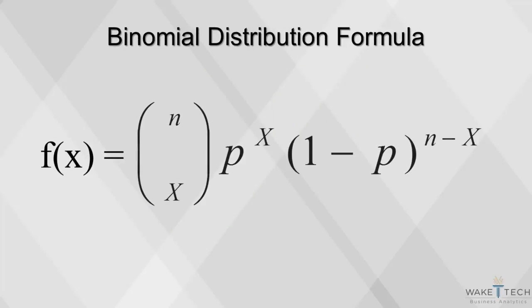This is the probability mass function formula for a binomial distribution. If we toss a coin 100 times, what is the probability that we will get 40 heads? What is the probability of getting 90 heads? That probability can be computed by applying this formula.